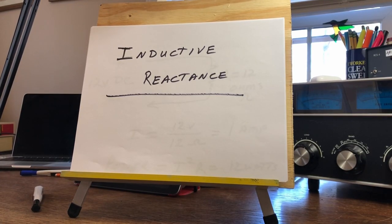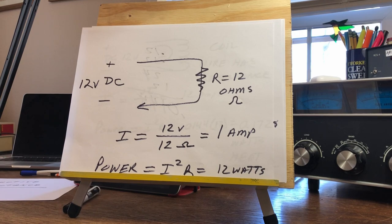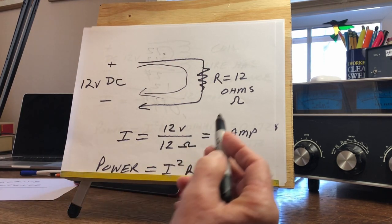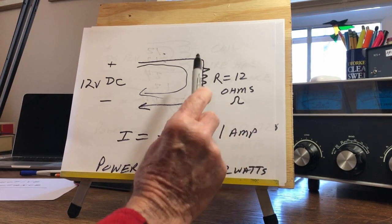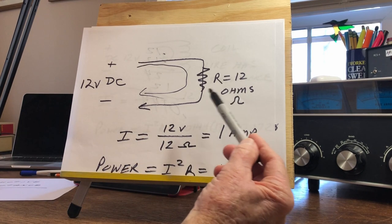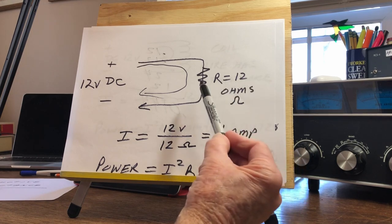This is going to be a short video to try to shed some light on reactance. Starting with inductive reactance — that's fairly easy to explain. We all know that with DC, current flows only in one direction. If we put a 12-ohm resistor across a 12-volt battery, the resistor impedes the current flow. The bigger the resistor, the more impedance to current flow.